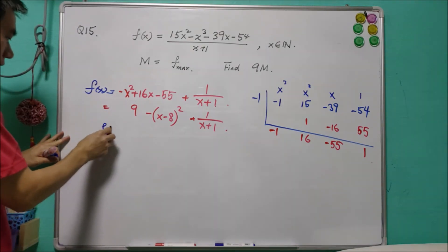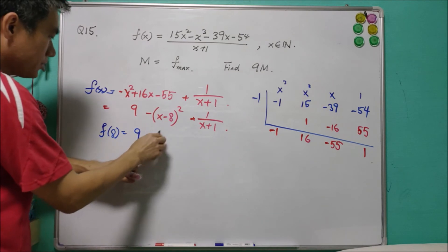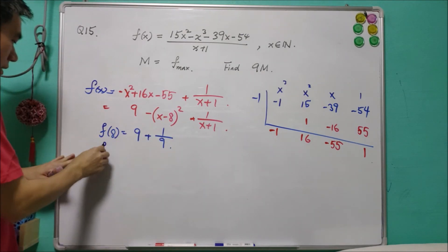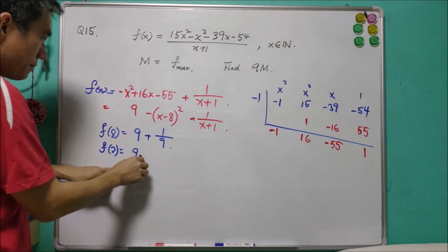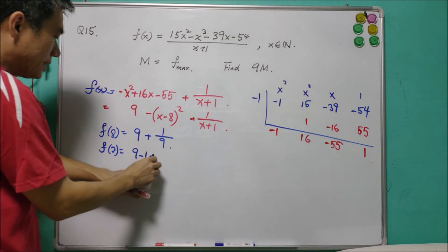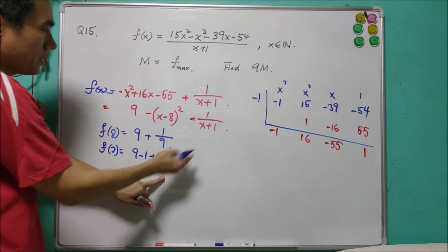We know that f of 8 will be equal to 9, and this is plus 1 over 9. If we consider, for example, f of 7, then this will be 9 minus 1. This will reduce by 1, and this will be increased a little bit. Just a little bit. Definitely less than 1.